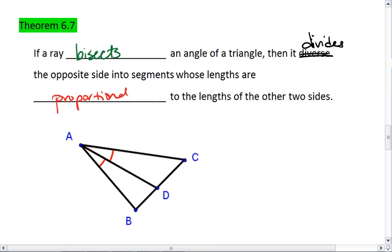What this means is this. If we have an angle bisector, then it cuts our triangle into two proportional parts.